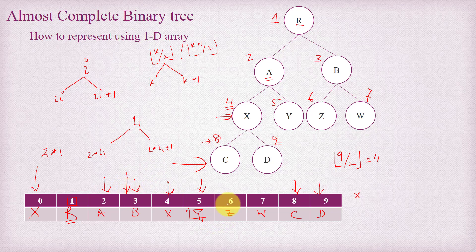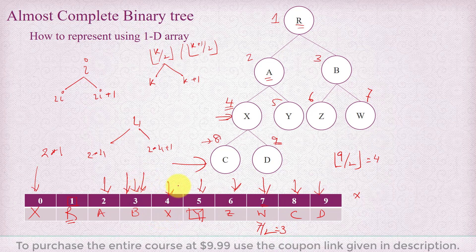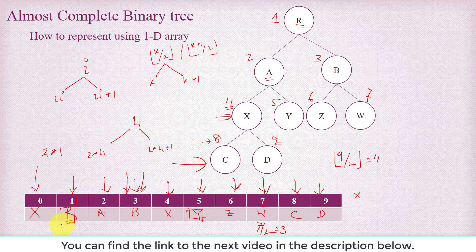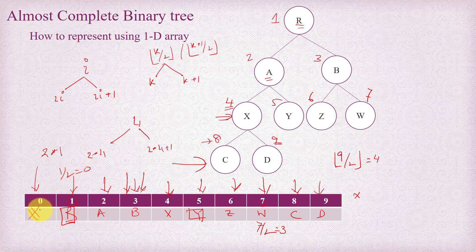For index 3, the left child is at 6. For index 7, dividing 7 by 2 and taking the floor gives 3, so the parent of node 7 is at index 3. Given a node number, we can easily find its left child, right child, or parent. If you compute the parent of index 1, you get 1 divided by 2 equals 0, and index 0 contains nothing, confirming it has no parent — so index 1 is the root. That's how we represent an almost complete binary tree using a one dimensional array.